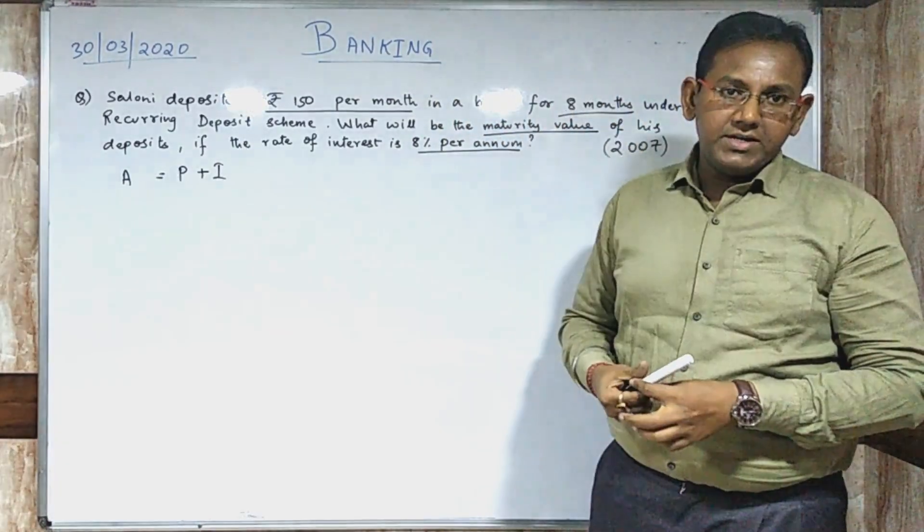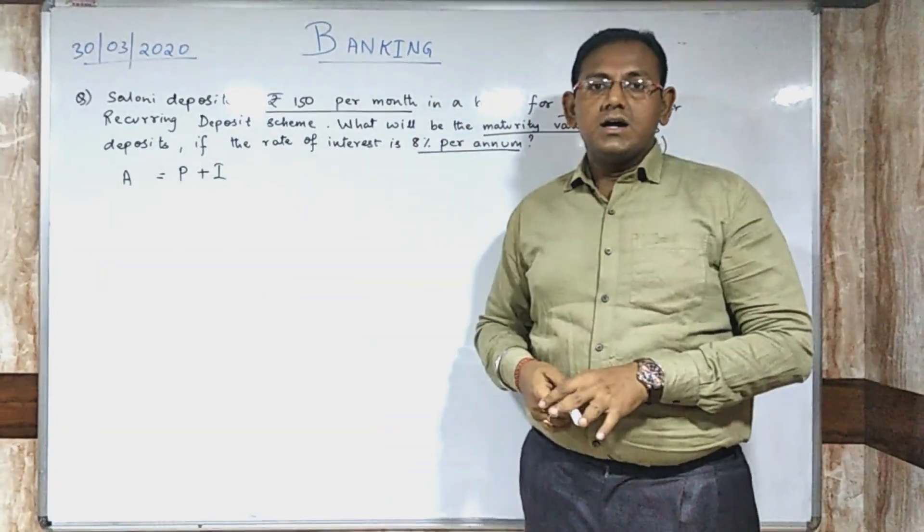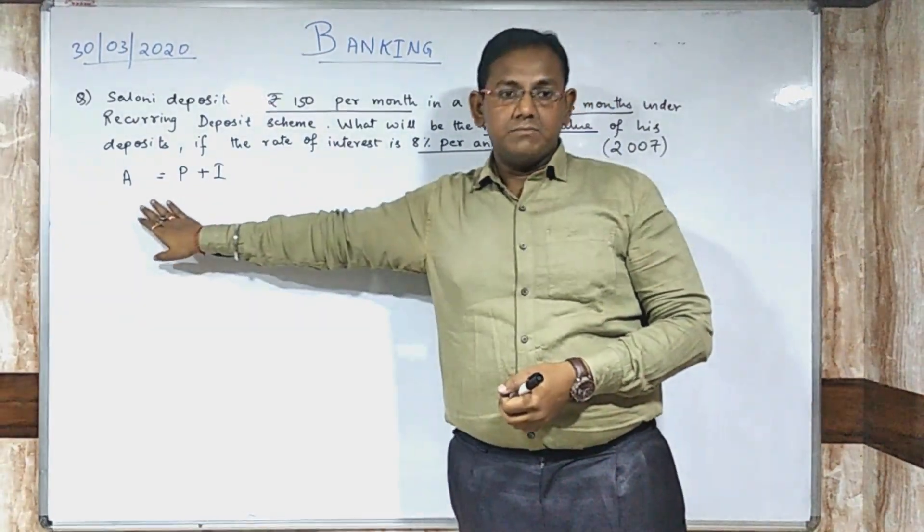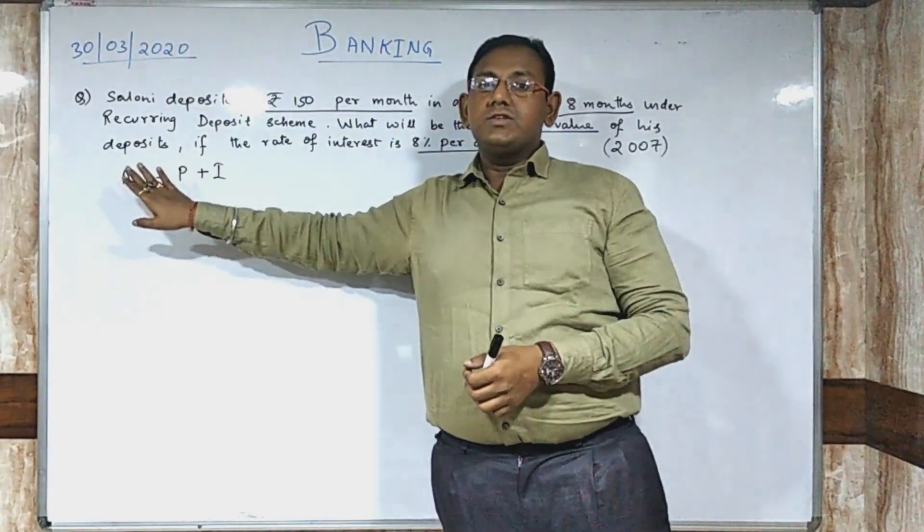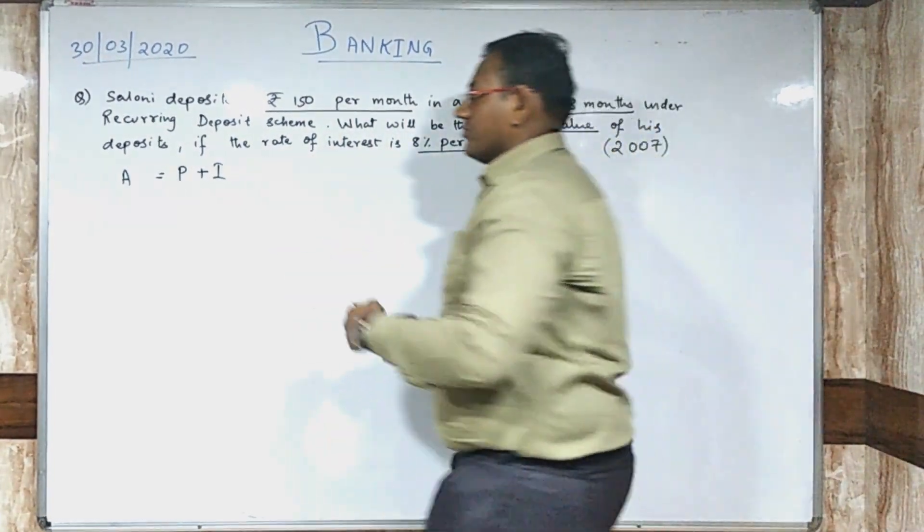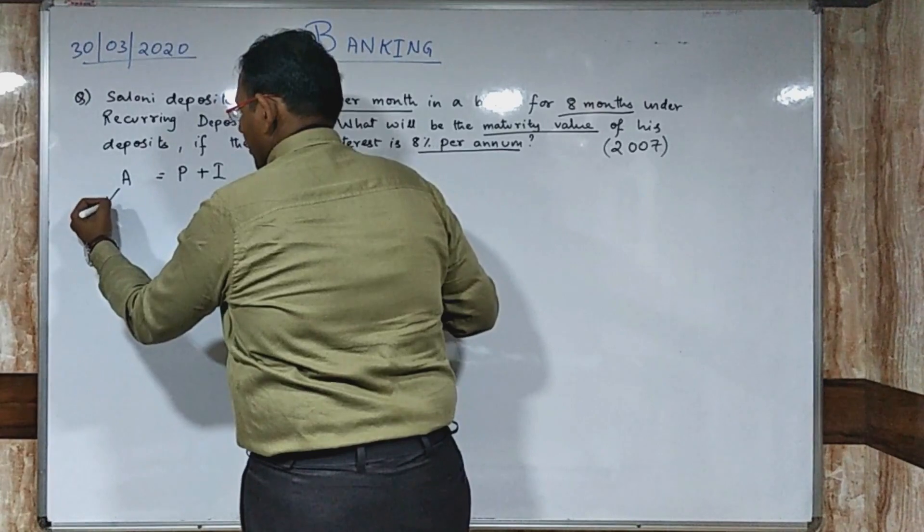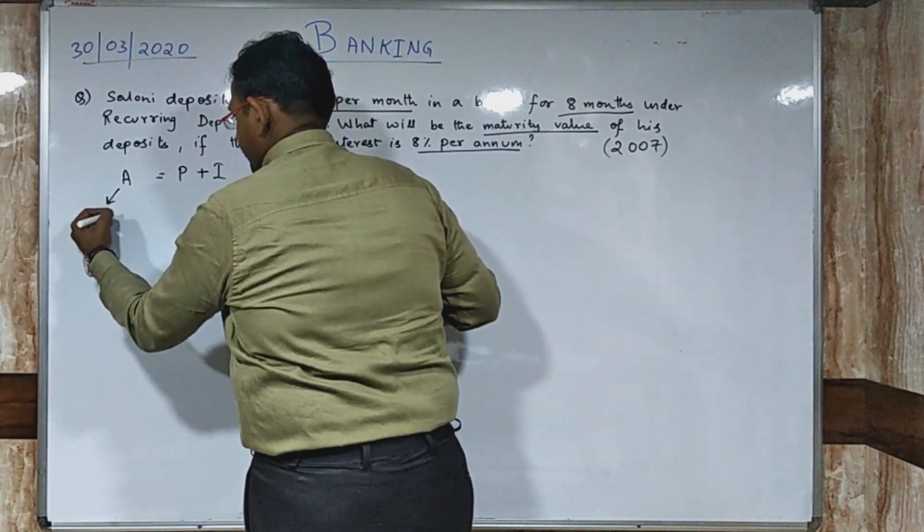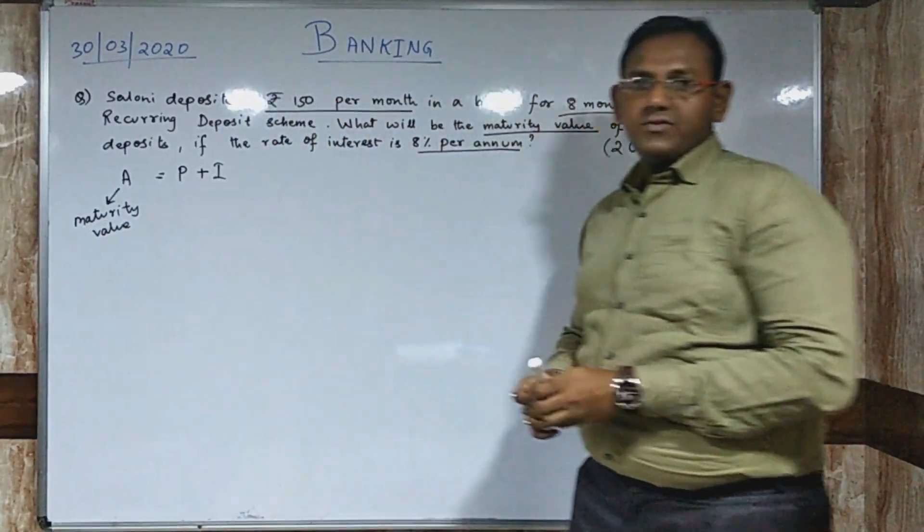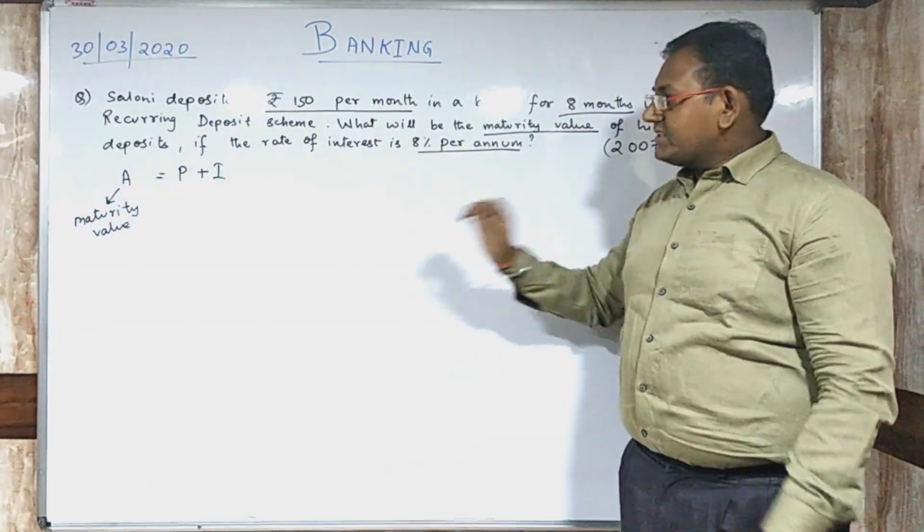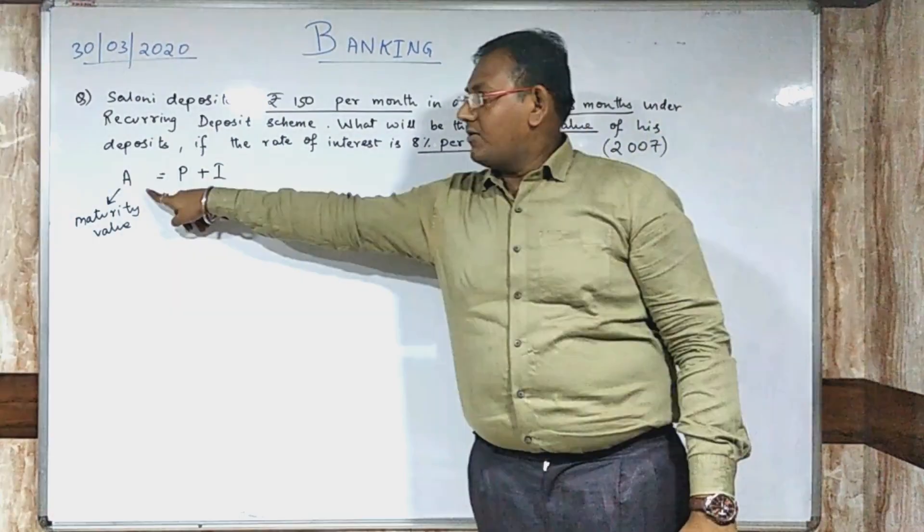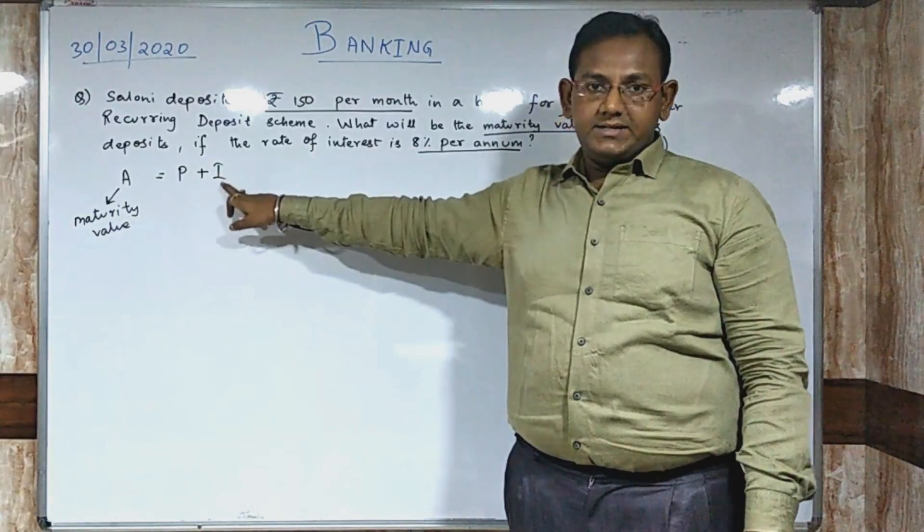When we started compound interest or simple interest, we already know that principle plus interest is amount. This amount that you are getting in your hand is called the Maturity Value. This is basically your Maturity Value. Whenever the question comes of Maturity Value, you need to find out the amount.